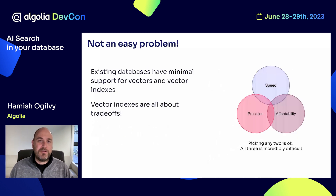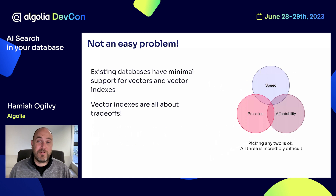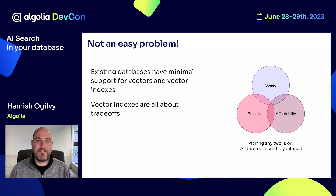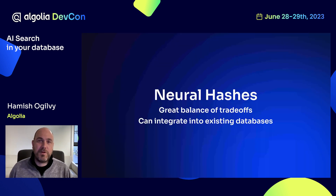That sounds great, but practically speaking, when you want to find the most similar vectors in high-dimensional space, it's not an easy problem. There are a couple of trade-offs: speed, precision, and affordability. The industry joke is you can only pick two, which is fairly true, so you have to mind your trade-offs. The other thing to note is that existing databases don't have good support for vector-style indexes, so quite often this requires duplication into a second data store, which is not ideal. We like neural hashes because they're a great balance of trade-offs, and they integrate really well into existing data stores.